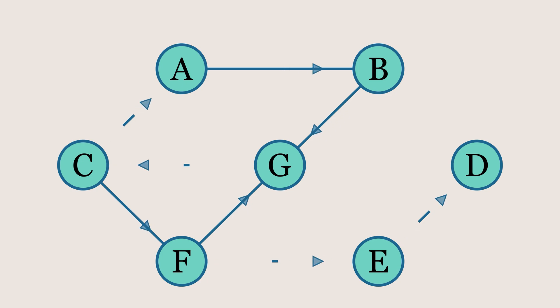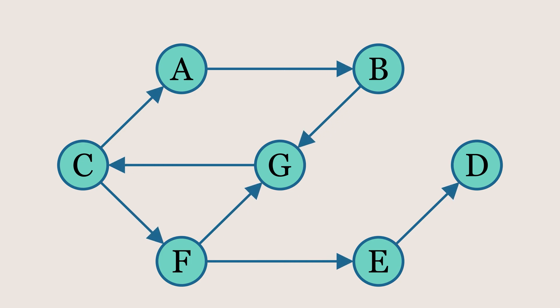A directed graph, on the other hand, is one where the edges have a direction. This means that the connections between nodes only allow movement in one specific direction, from one node to another.